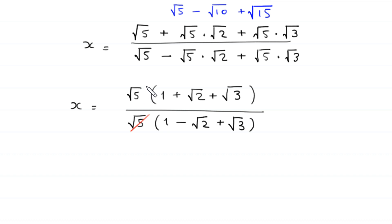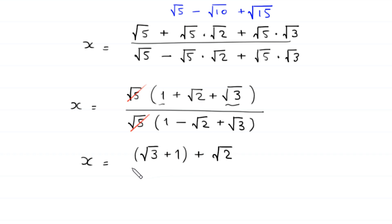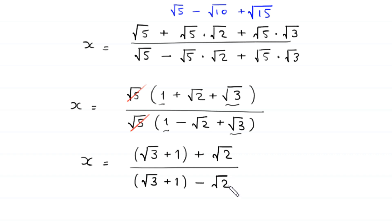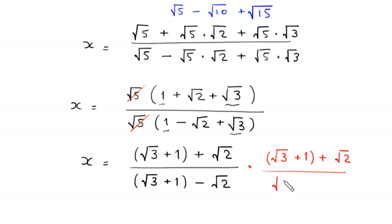Now this root 5 cancels with this root 5, and we are left with x equal to: we combine root 3 and 1 as (root 3 plus 1), plus root 2, divided by (root 3 plus 1) minus root 2. To rationalize the denominator we multiply and divide by the conjugate of the denominator, which is (root 3 plus 1 plus root 2) divided by (root 3 plus 1 plus root 2).